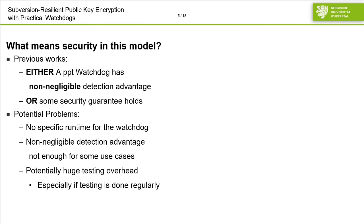Of course, then the question becomes: what does security mean in this model? In previous works, asymptotic definitions are used, where a probabilistic polynomial-time watchdog has a non-negligible detection advantage, or the security guarantee of your underlying primitive holds. So always one of the two has to hold in order to be subversion-resilient. There are some potential problems with this kind of definition. First, you don't have any specific runtime for the watchdog, because using asymptotic definitions you just say there exists some polynomial-time watchdog, but especially if you want to deploy in practice, it is not clear for how long you would need to run your watchdog.